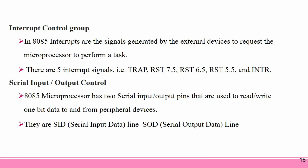Interrupt Control Group: In the 8085, interrupts are signals generated by external devices to request the microprocessor to perform a task. There are 5 interrupt signals: Trap, RST 7.5, RST 6.5, RST 5.5, and INTR.